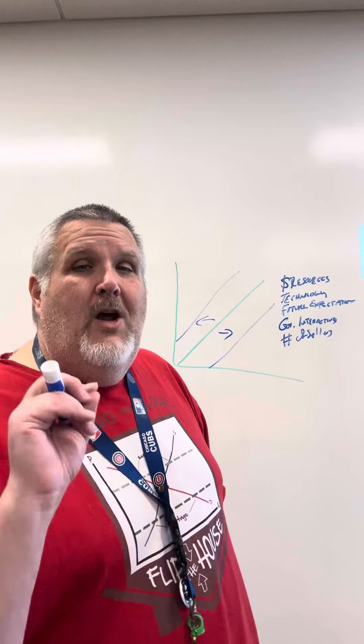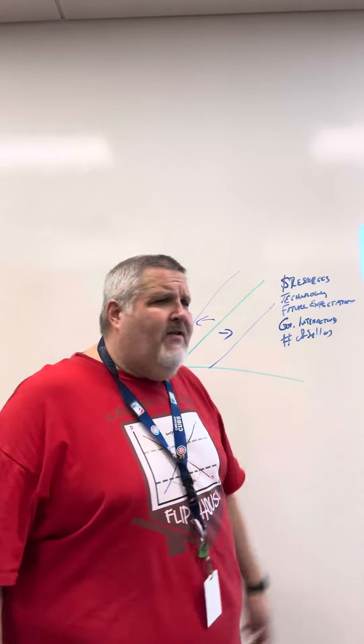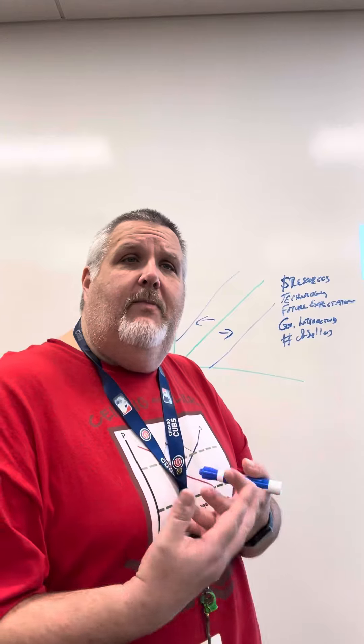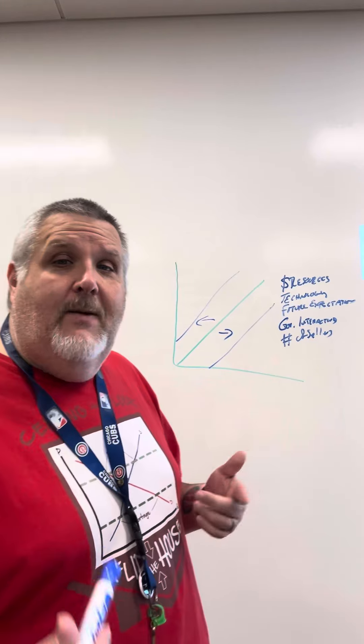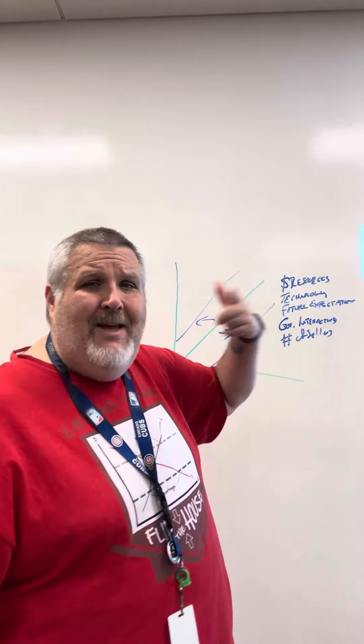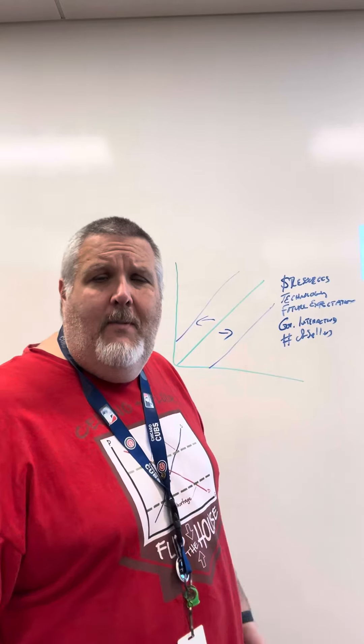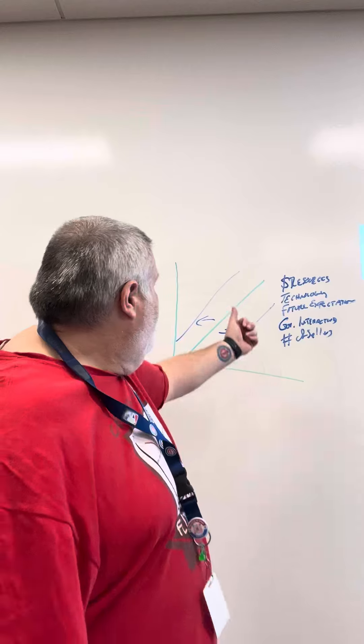Government interactions. Remember there's two ways that the government can interact with us to shift our supply curve, and that would be to add subsidies, means the government's going to be giving you money to produce your product. That's going to make our supply go up. Or the government's going to tax you, the tax is going to shift it in that direction.